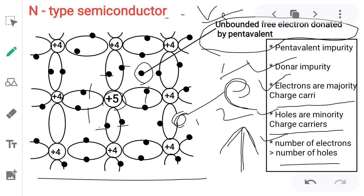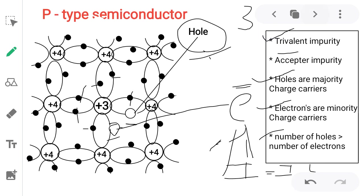In N type, total current depends on current due to electrons. In P type, total current is due to current due to holes. Why is trivalent impurity called acceptor? Acceptor means one empty space — one electron acceptor due to the capacity to accept an electron. Therefore, trivalent impurity is known as acceptor impurity.